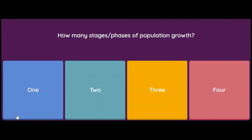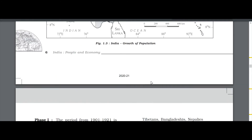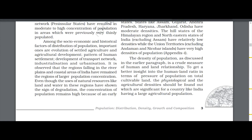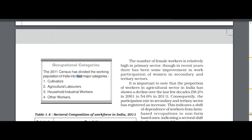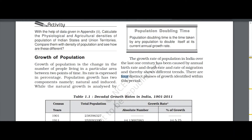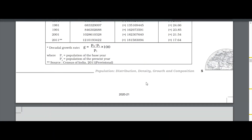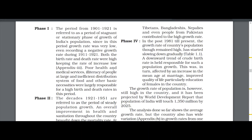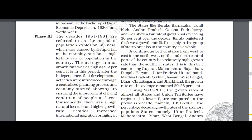How many stages or phases of population growth are there? Options are one, two, three, or four. The answer is four phases. The book clearly mentions four distinct phases: Phase 1 from 1901 to 1921, Phase 2 from 1921 to 1951, Phase 3 from 1951 to 1981, and Phase 4 from 1981 to the present.